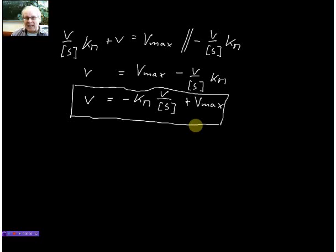Why is it linear? Well, we can write this as y equals mx plus c. So our m here, our gradient, would be minus Km, our x would be V over S, and our Vmax would be the intercept with the y-axis.